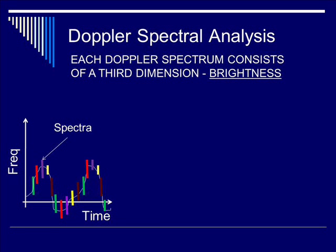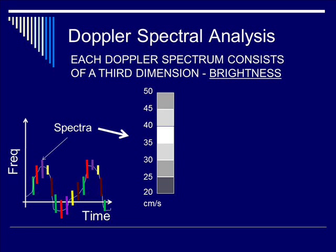These frequencies, or velocities, are separated into bins. In this case, they are separated into bins with intervals of 5 cm per second. For example, the 20 to 25 cm per second bin only has 3 data points. As you go up, the 35 to 40 cm per second bin turns out to have the highest number of counts.